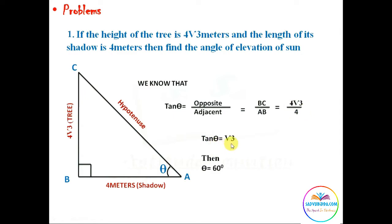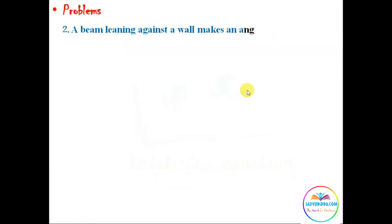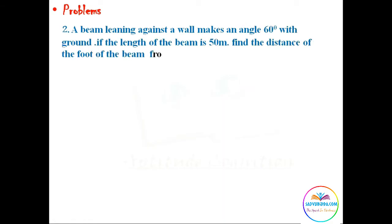Let us move to the next problem. Here second question, a beam leaning against the wall makes an angle 60 degrees with the ground. If the length of the beam is 50 meters, then we have to find the distance of the foot of the beam from the wall.